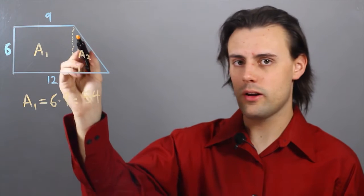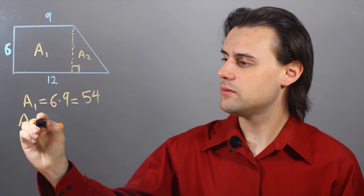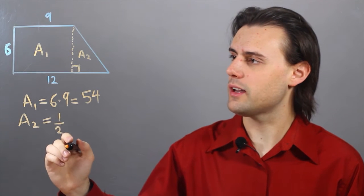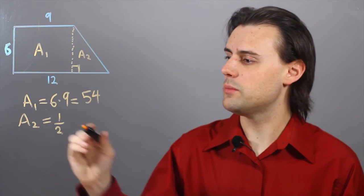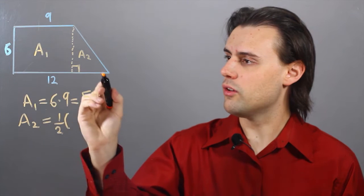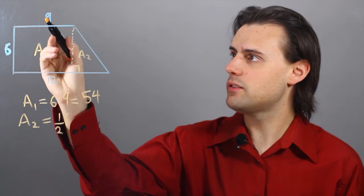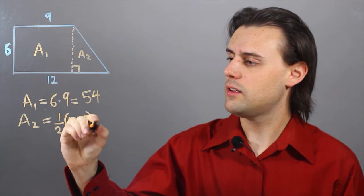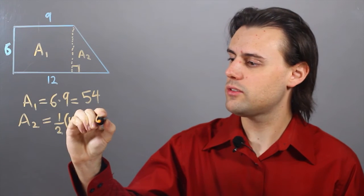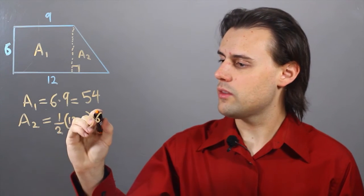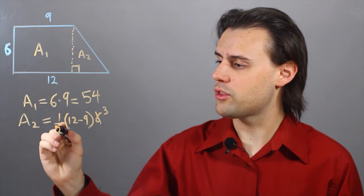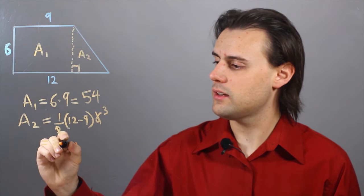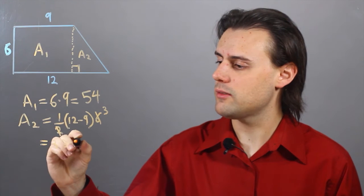And the area of this triangle is going to be equal to one half the base times the height. The base is going to be equal to the longer side minus the shorter side, so 12 minus 9. And my height, of course, is 6. So the 6 turns into a 3 when I divide it by 2, giving me 3 times 3, which is equal to 9.